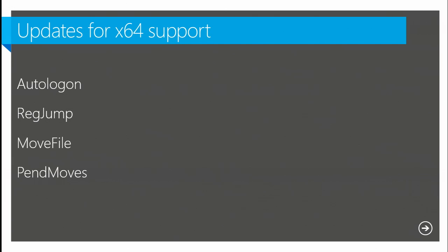Some utilities like Process Monitor, if you run them on a 64-bit system, have to run 64-bit code — they need a 64-bit driver, etc. The way Mark handles this is you download a 32-bit executable, and when it detects a 64-bit system, it has 64-bit versions of the program embedded within it, extracts those out, and runs them. That's what he does for Process Monitor and a few others where it absolutely has to run 64-bit code.